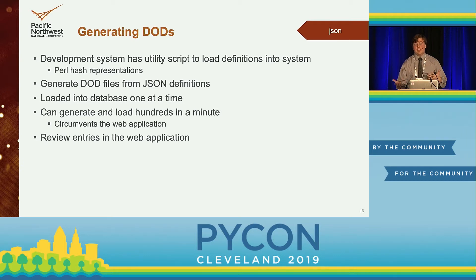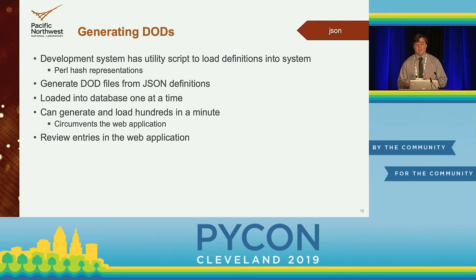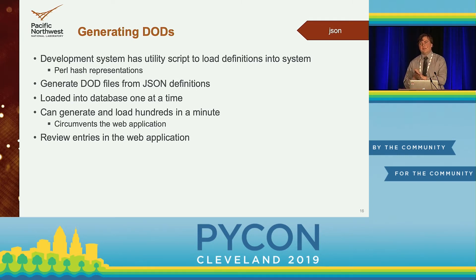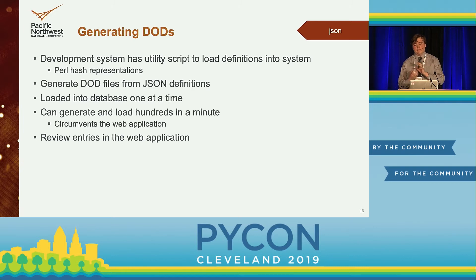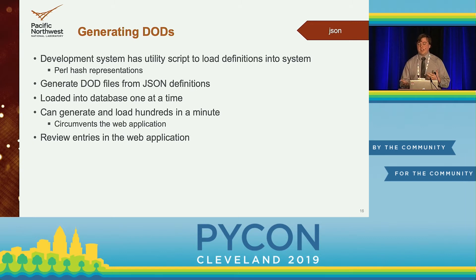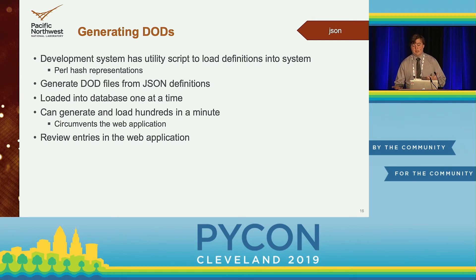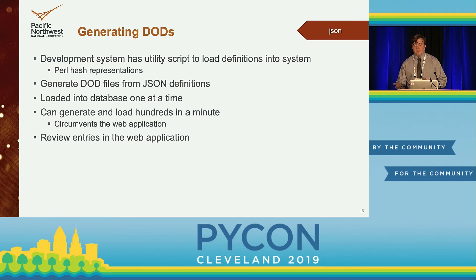For the actual generating of the DODs, the ARM development system has a utility script that is able to load Perl hash representations of the DOD definitions into the database. We can generate these data design files from our JSON definitions. Taking all the variables from the categories in the product-level definition, we check their entries in the category-level definitions to fully flesh out the data specification. We then load them into the database one at a time. For small updates — like a variable name change or an update to data types — we can generate hundreds of these DODs and load them into the database in less than a minute, circumventing navigating through hundreds of DODs through the web application and saving them one at a time, which we found to be untenable.